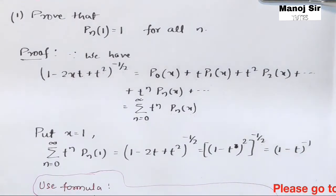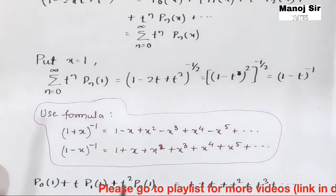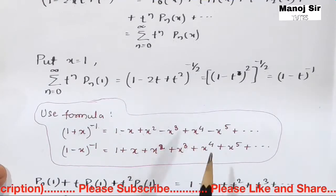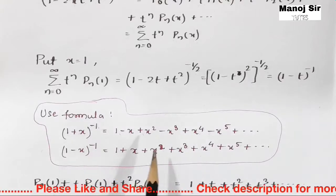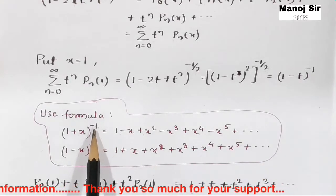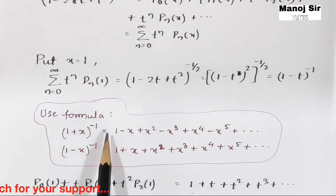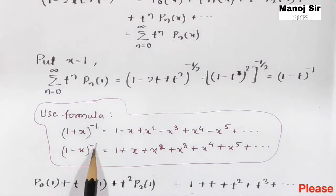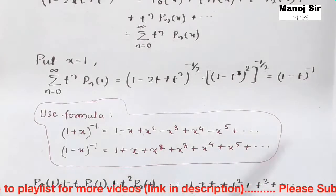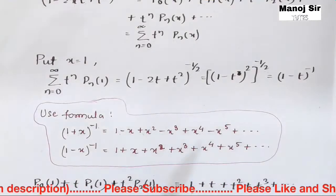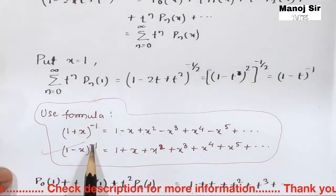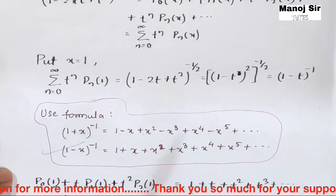To expand this, we need two important formulae. The first is (1+x)^(-1) = 1 - x + x² - x³ + x⁴ - x⁵ + ... The second is (1-x)^(-1) = 1 + x + x² + x³ + x⁴ + x⁵ + ... These two formulae are very important and easy to memorize.